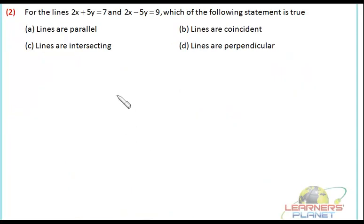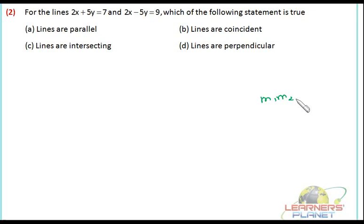Now friends, we start solving problems. We have discussed various forms of line and various other concepts. What is the relationship between two slopes if two lines are parallel, intersecting, or perpendicular to each other? If two lines are perpendicular, the product of their slopes m1 and m2 equals minus 1. If the lines are parallel, then m1 equals m2. And if the lines are only intersecting — neither perpendicular nor parallel — then no specific relationship is derived between the two slopes.